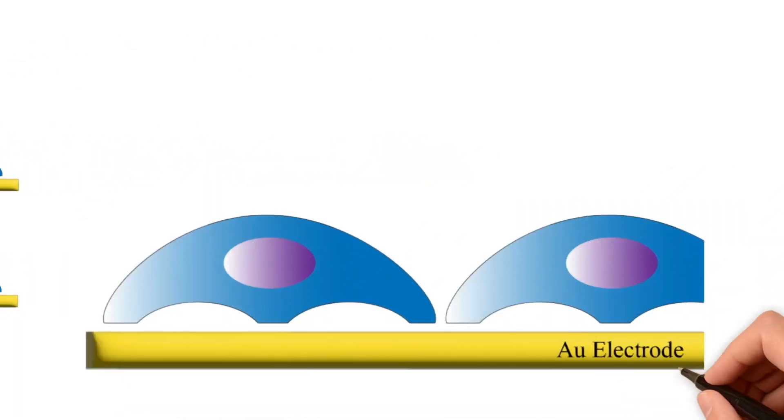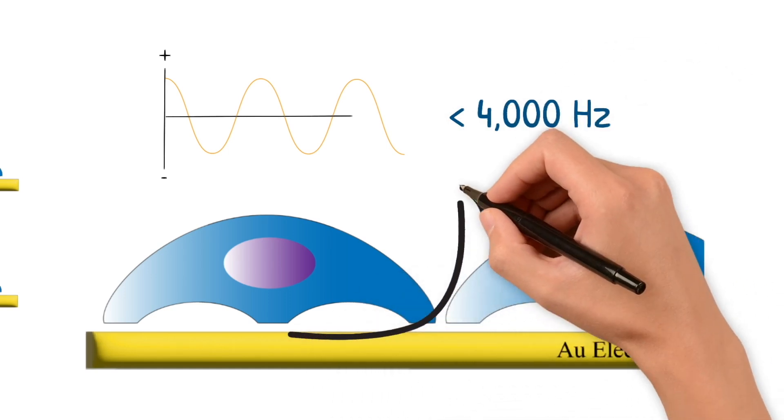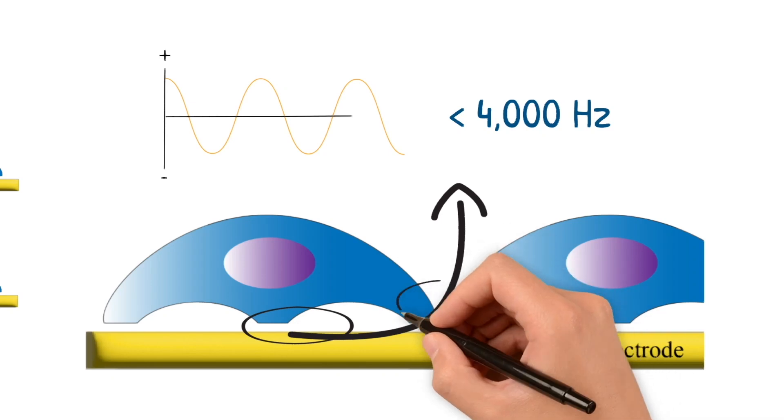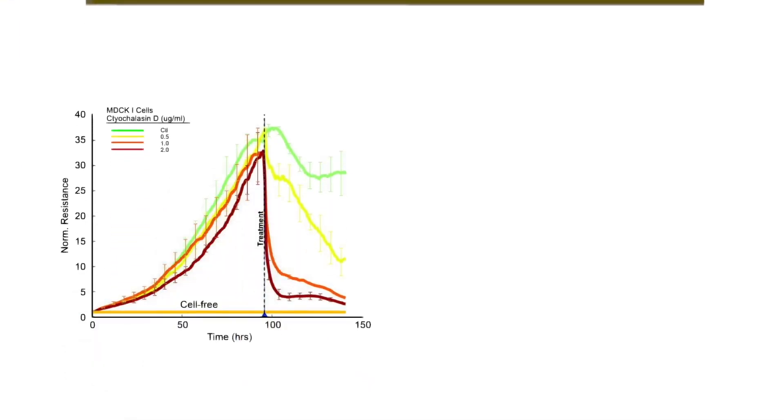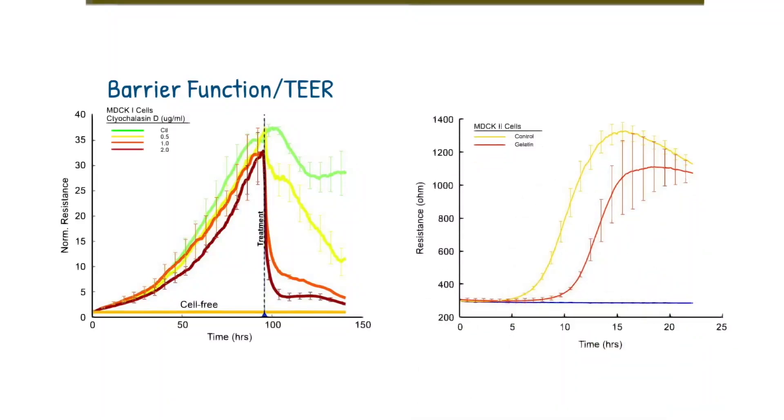Since ECIS uses an alternating current, we can take advantage of the speed of oscillation of the current in terms of its frequency. When we have low AC frequency, say less than 4000 Hz, the majority of the impedance is being caused by the current traveling the resistive pathway around the cells and experiencing impedance from the attachment and the cell-to-cell junctions. This pathway makes low AC frequency very useful for measuring characteristics like barrier function TEER or even attachment resistance.